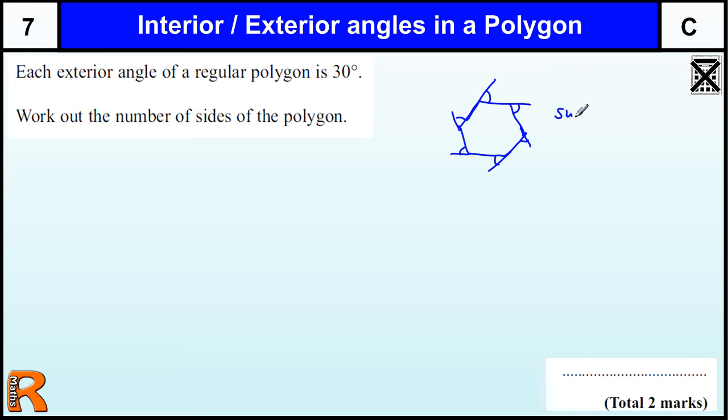So the sum of exterior angles equals 360 degrees.